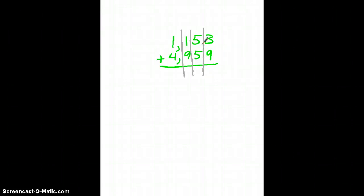So we've got a problem here. It's got thousands place, hundreds place, tens place, and ones place. And you can see we're adding two really large numbers together: 1,153 plus 4,959.